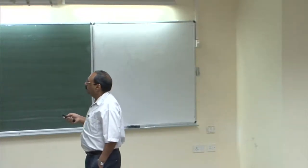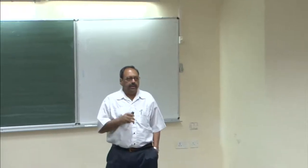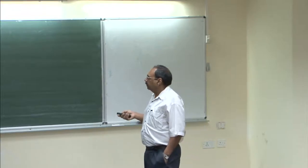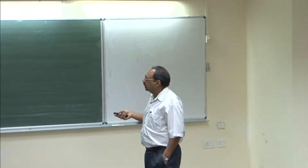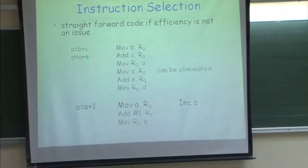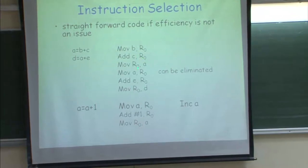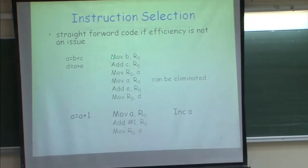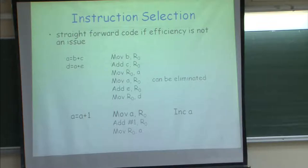Let us look at code generation — or what I call instruction selection — because we have already done code generation and at this point we are generating concrete syntax of the machine. For something as trivial as two assignments — A assigned B plus C, and B assigned A plus E — we can generate very trivial code: for the first three-address instruction, generate three machine instructions: move B to a register, add C to the register, then move register to A.